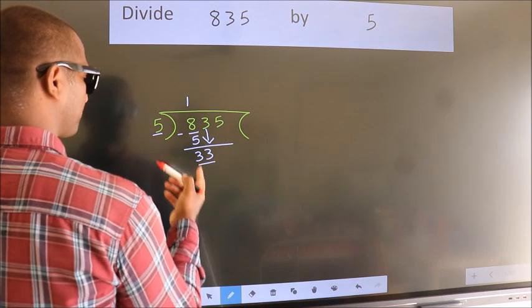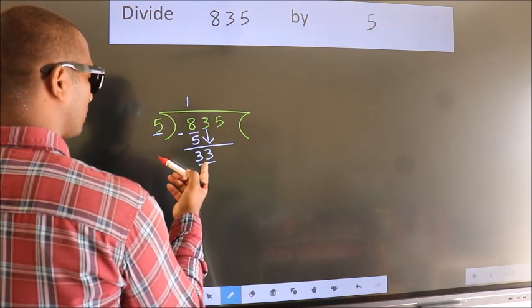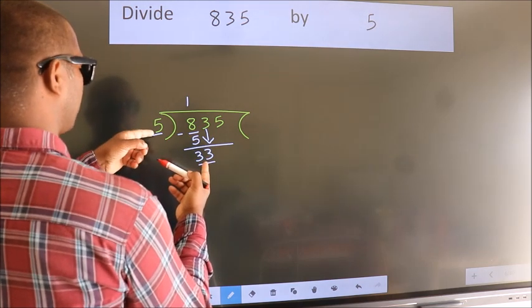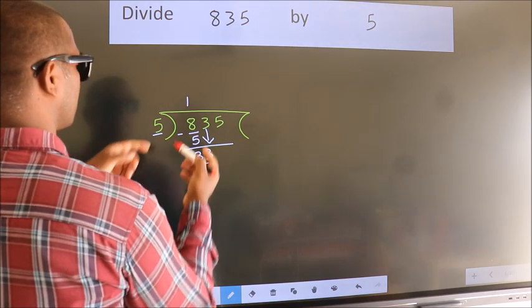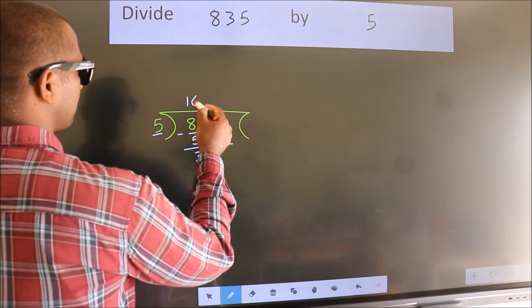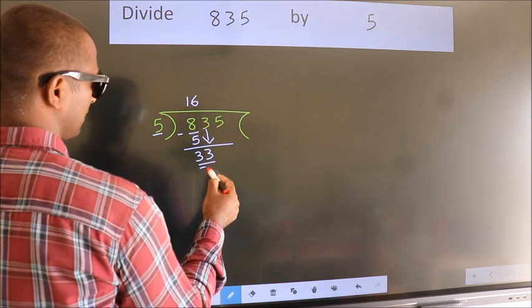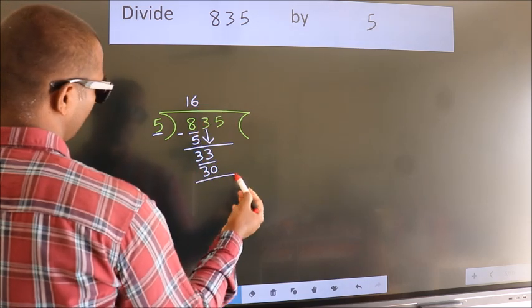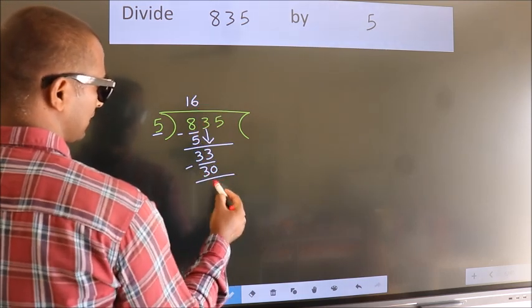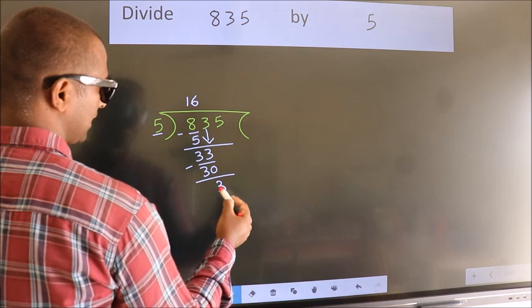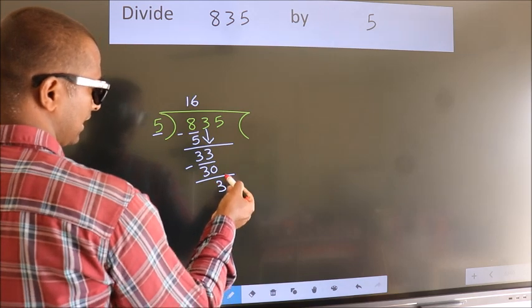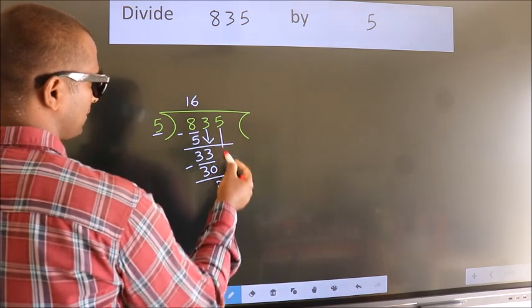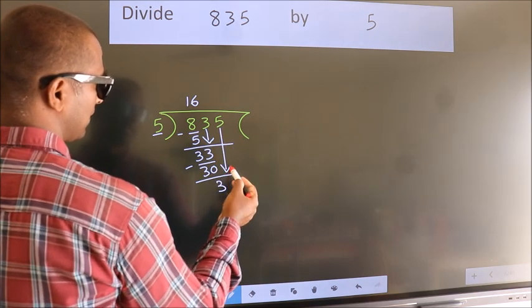So 33. A number close to 33 in the 5 table is 5 sixes = 30. Now we subtract. We get 3. After this, bring down the beside number.